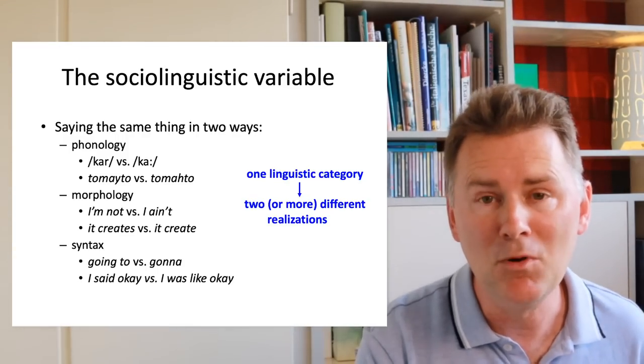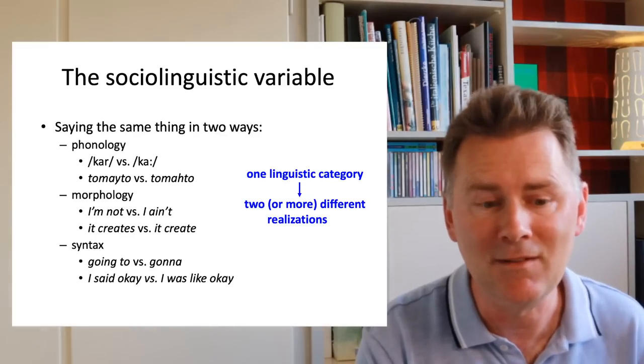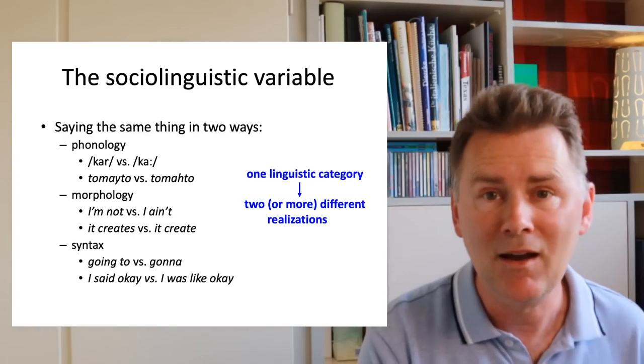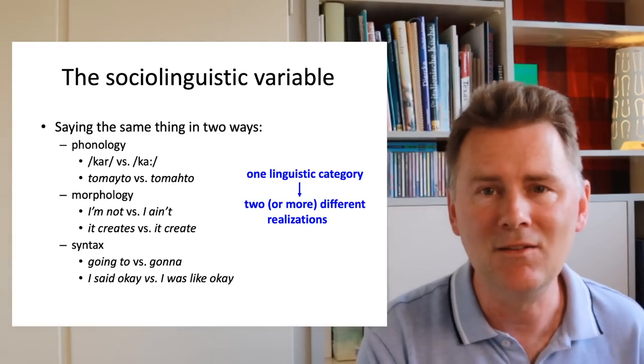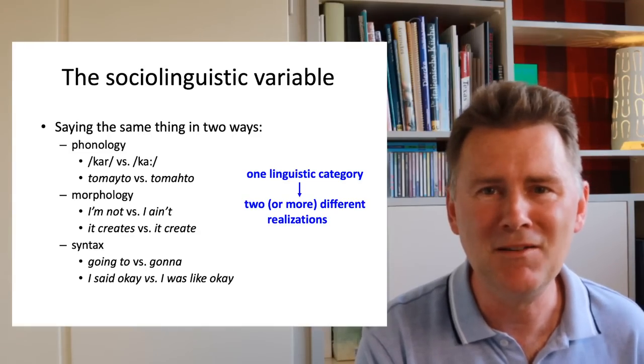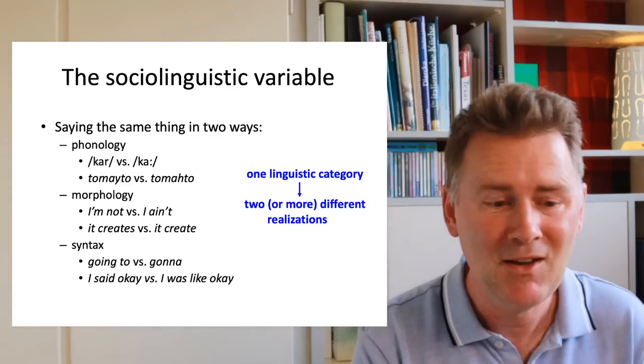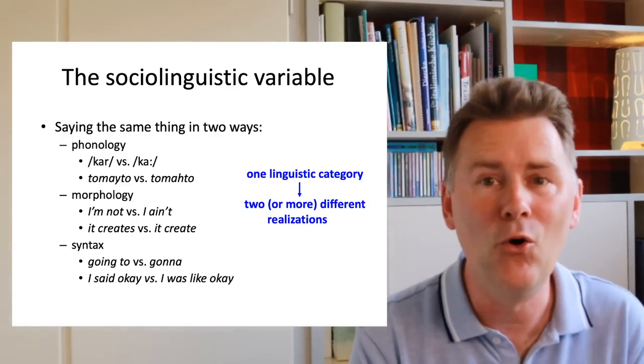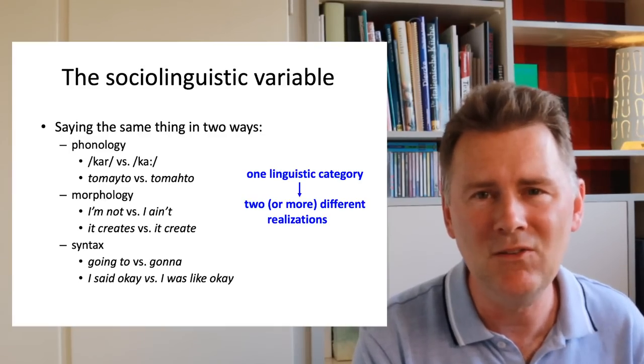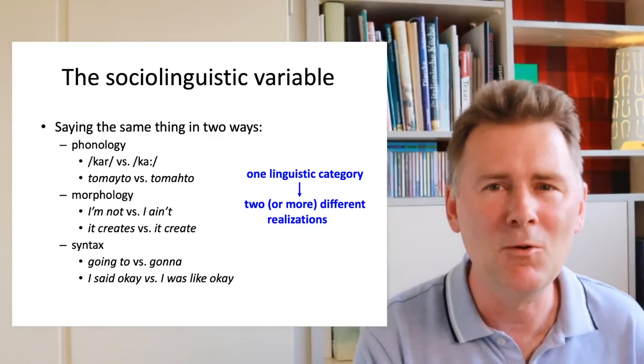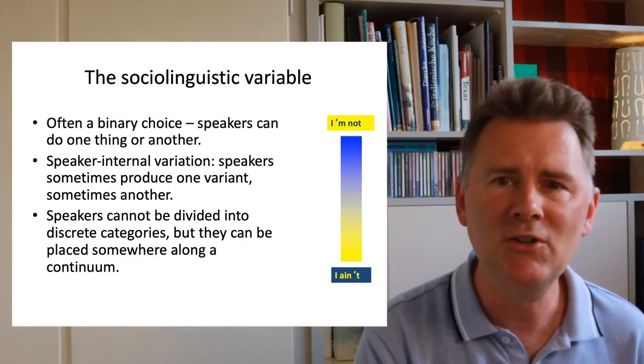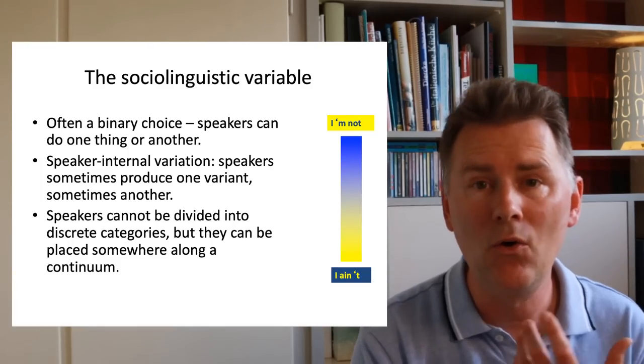In syntax, we have the difference between the way you introduce quotations. Do you say, I said okay, or do you say, I was like okay. Which one of these you choose says something about who you're hanging out with? Sociolinguistic variables often represent a binary choice so that speakers can do one thing or the other. However, it is rarely the case that a speaker goes for one variant a hundred percent of the time.